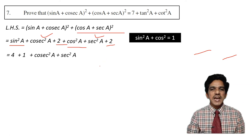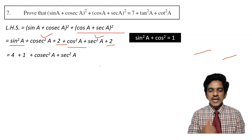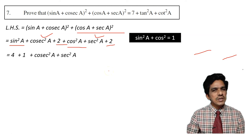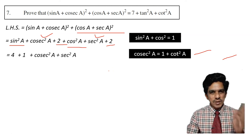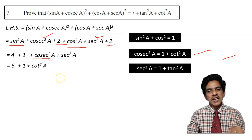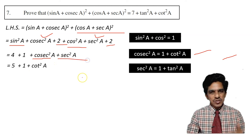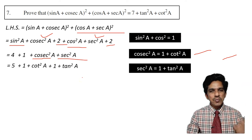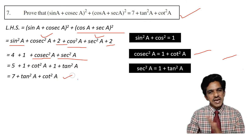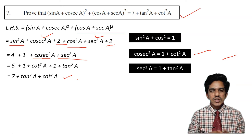The right hand side has 7 plus tan square a plus cot square a. We need to convert cosecant and secant using trigonometric identities. Cosecant square a equals 1 plus cot square a, and secant square a equals 1 plus tan square a. So we have 4 plus 1 plus cot square a plus 1 plus tan square a. Adding the constants: 4 plus 1 is 5, plus 1 is 6, plus 1 is 7. So we get 7 plus tan square a plus cot square a, which matches the right hand side. Proved.